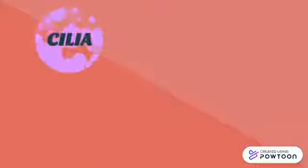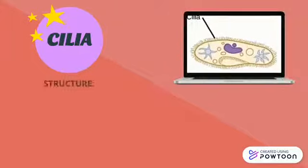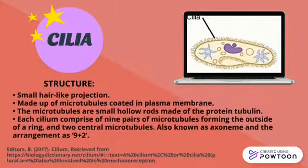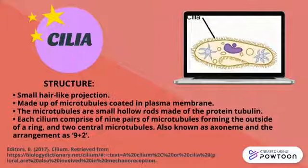Cilia are small hair-like projections present on the outer surface of a eukaryotic cell. They are made up of microtubules, which are small hollow tubes made up of the protein tubulin, and consist of a 9 plus 2 arrangement.